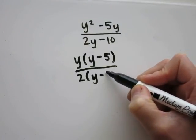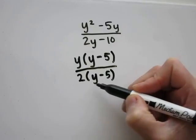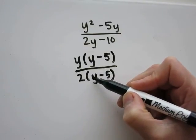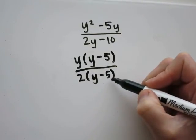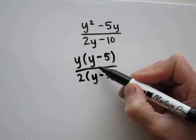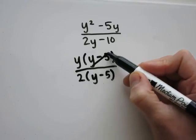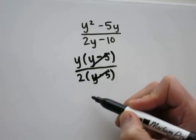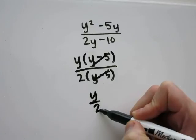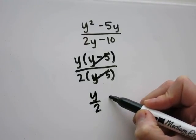10 divided by 2 is 5. Distribute to double-check: 2 times y is 2y, 2 times 5 is 10. Now I have y minus 5 in the numerator and denominator that can be canceled. That leaves a final answer of y over 2, which is the same as letter C.